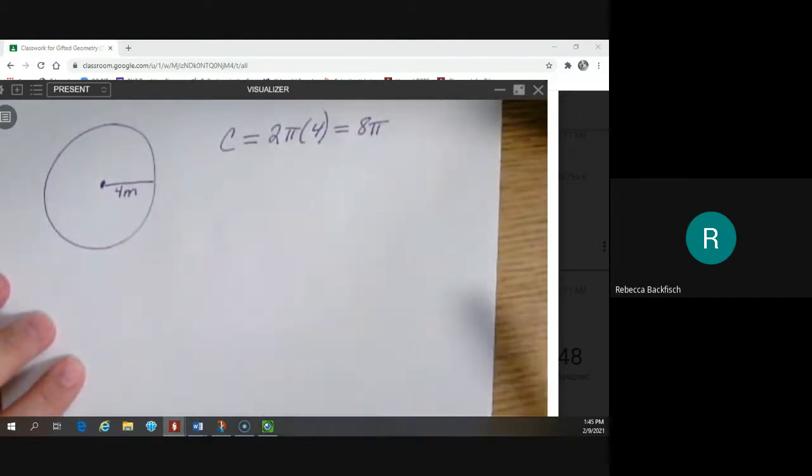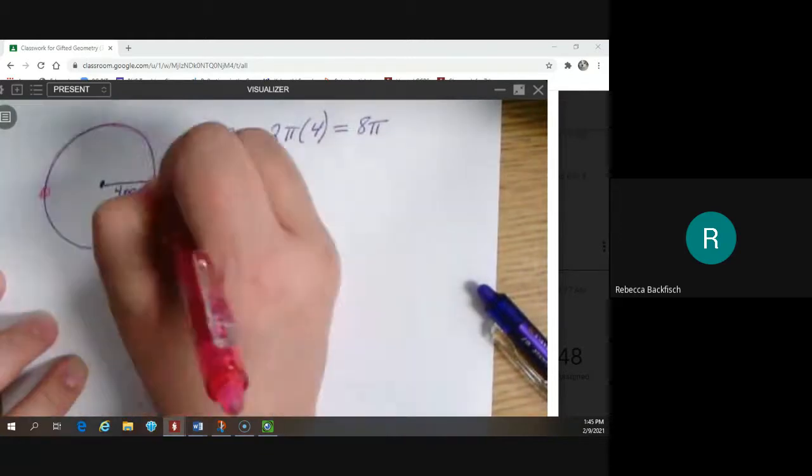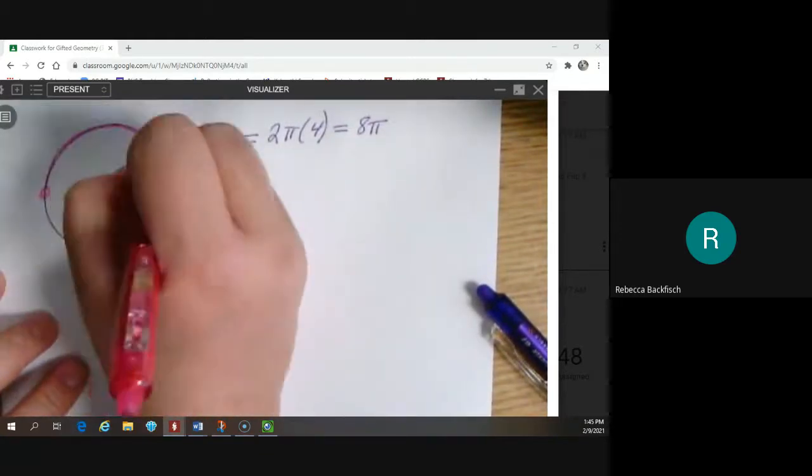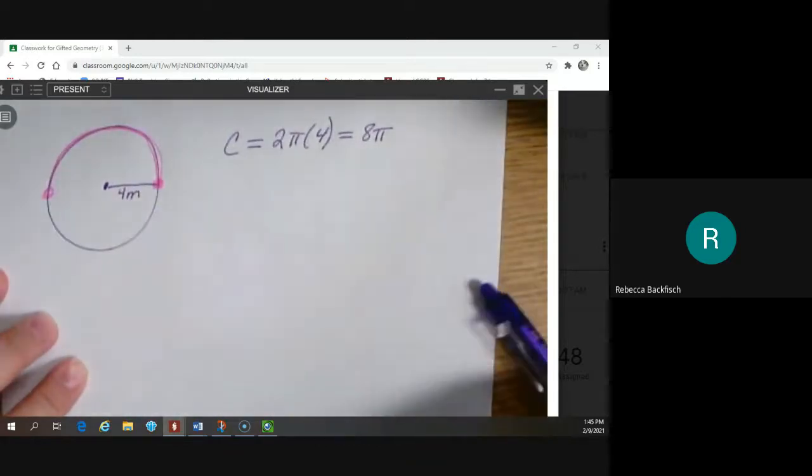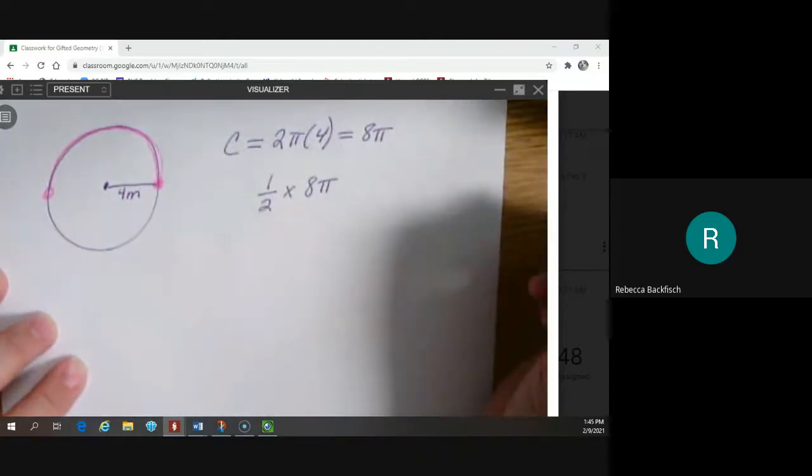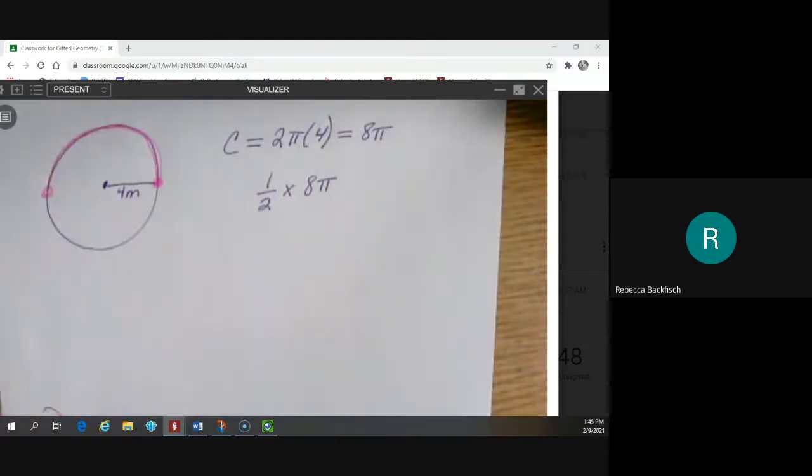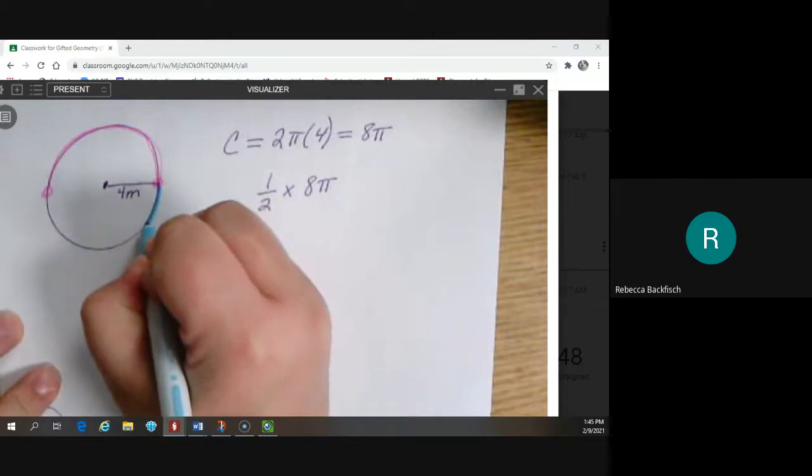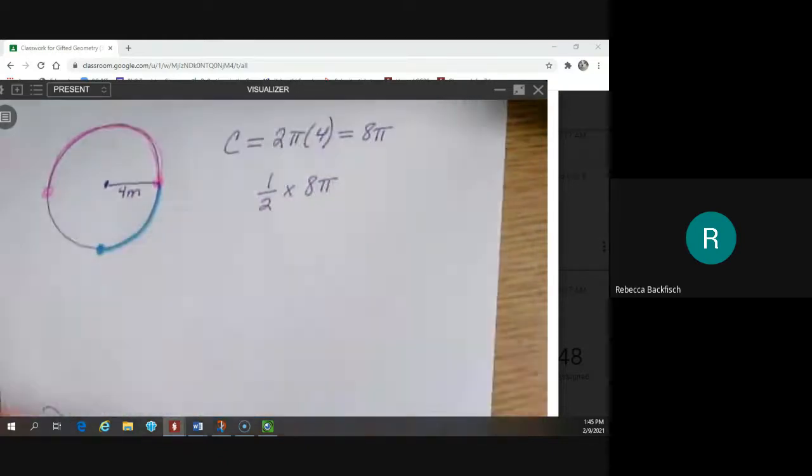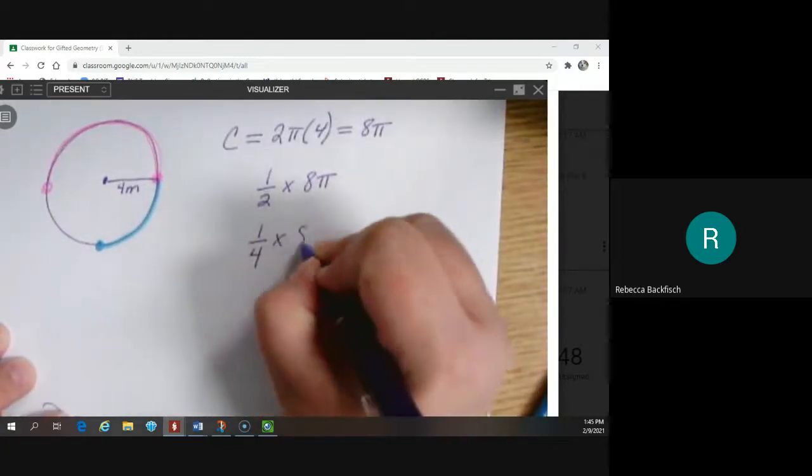So if I said, I want you to tell me how far it is to go halfway around that circle. So like, I have a pet ant and I put him on the circle and I make him walk the circle like it's a track. And I want to know how far he walked. Well, then I would say, well, that's half of the circle. So half of the circumference, right?